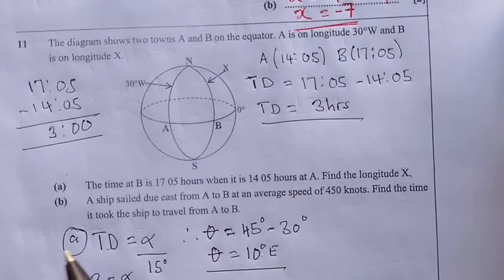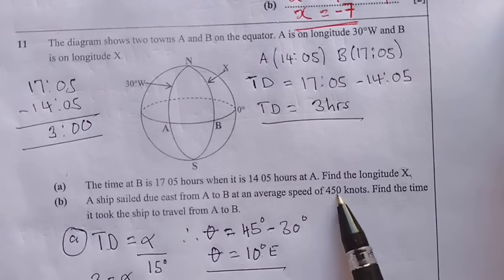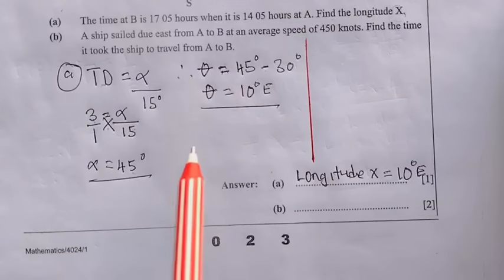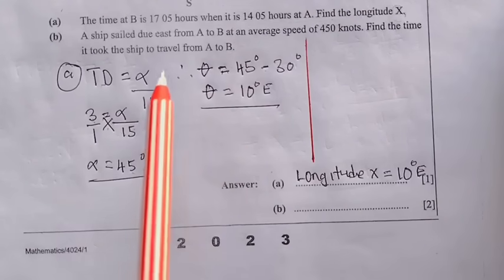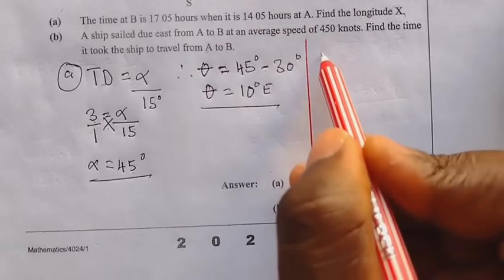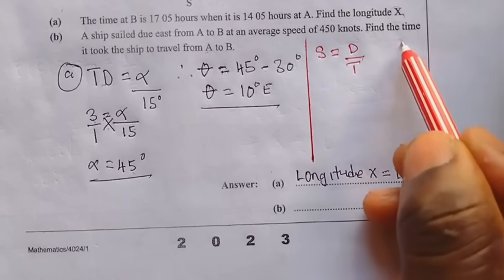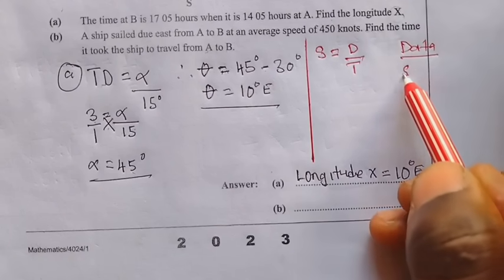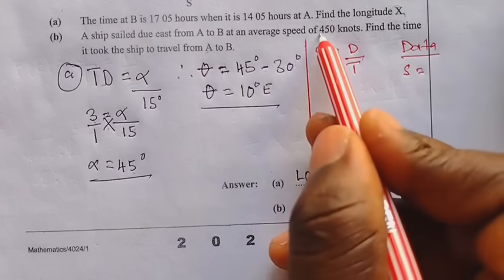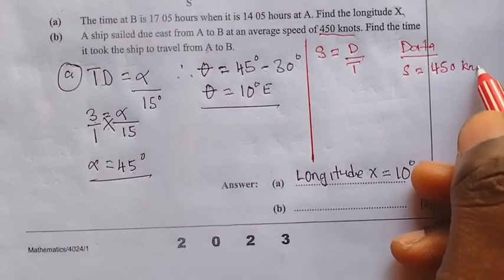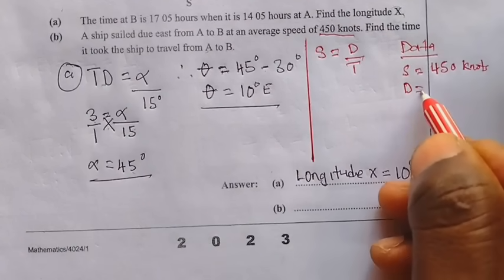Question B: a ship sailed due east from A to B at an average speed of 450 knots. Find the time it took the ship to travel from point A to B. We are going to use the formula: speed equals distance over time. Your speed is 450 knots.